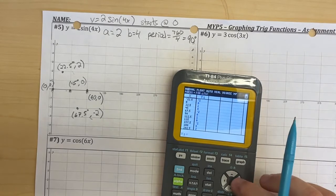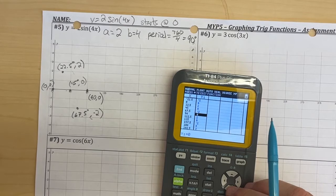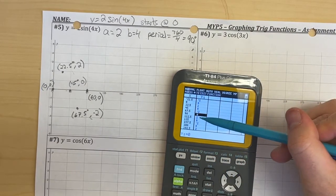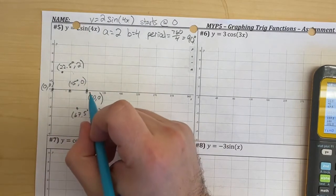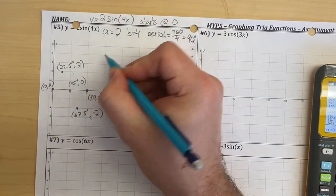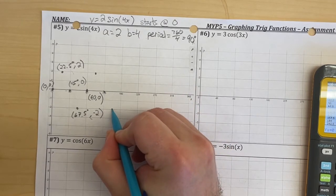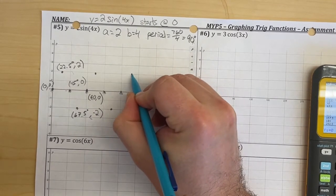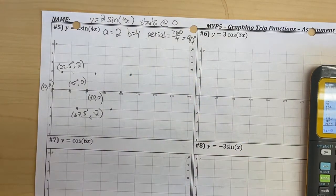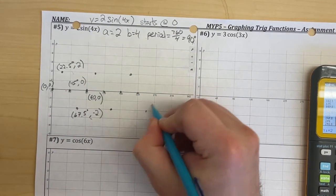Starting at 0, my y value is 0. I go up to 2 at 22.5, go to 0 at 45 degrees, down to negative 2 at 67.5, and we end at 0 for 90 degrees. That's those 5 values for one rotation. I can continue those values after that: up to 2 at 112.5, down to 0 at 135, down to negative 2 at 157.5, 180 is 0, 202.5 is 2, 225 is 0. I'm using that table of values — you can notice the pattern yourself as well.